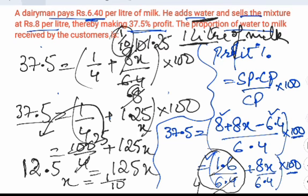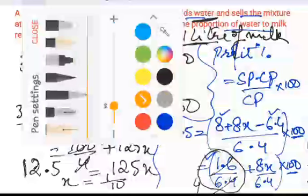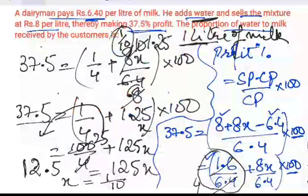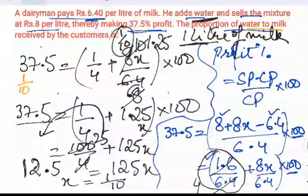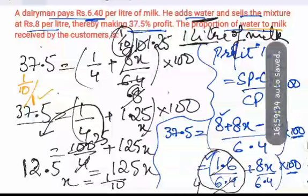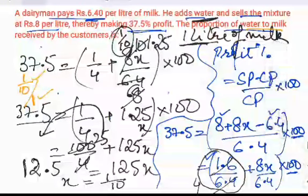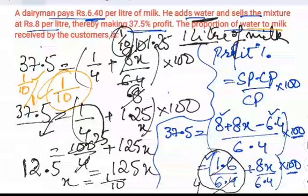So the proportion of water to milk is 1 by 10 upon 1. Because milk is 1, the water is 1 by 10, and milk is 1. So the ratio of water to milk is 1 by 10. So this is the answer, 1 by 10.